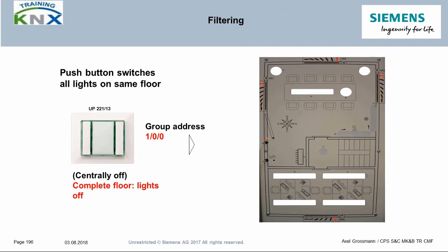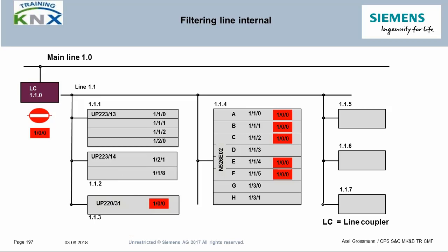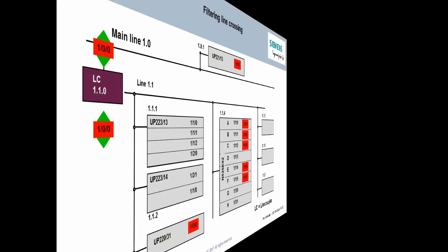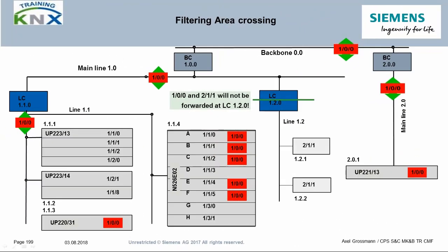With the information learned in this chapter, you can now proceed to perform the practical lesson for line-crossing communication. The task is to control all lights in the gamma training kit by using a push button on the main line. We did the central off control already, but only line-internally. The line coupler in this situation does not forward the telegram on group 1.0.0.0. Now, with a push button on the main line using group address 1.0.0.0, the filter table of the line coupler gets an entry on this address, so the related telegrams are forwarded in both directions. In a bigger network, the path for telegrams using the same target group address is properly built by ETS and transferred into the corresponding couplers' filter tables.